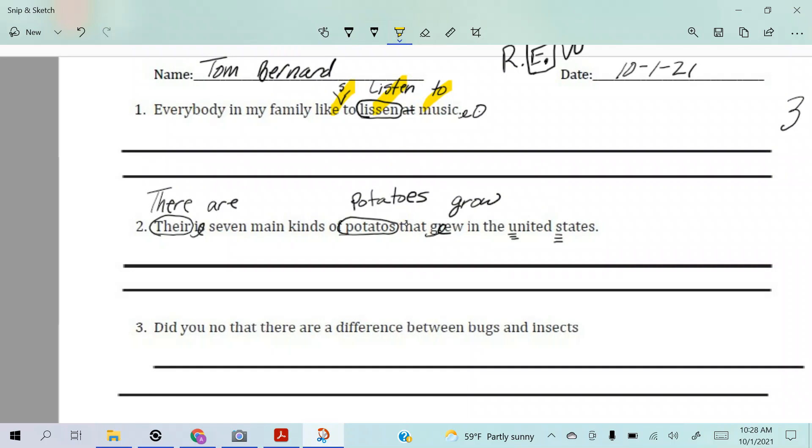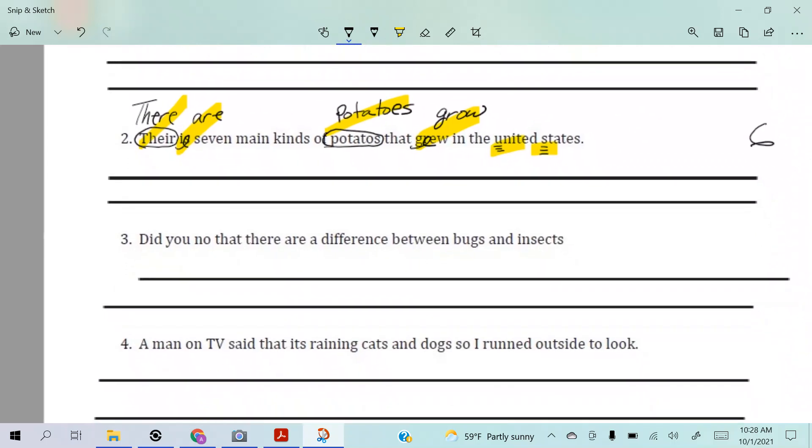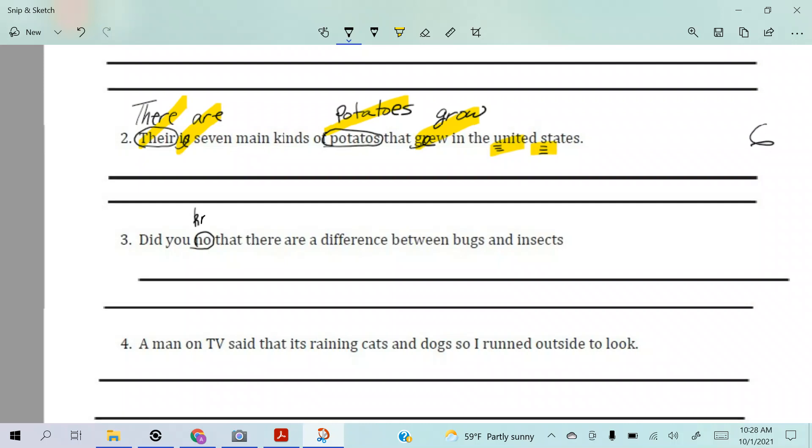All right, so we have 1, 2, 3, 4, 5, 6 - six corrections for number two. Lots of stuff to be found there. All right, did you know that there are a difference between bugs and insects? Okay, this is the wrong form of that word. Did you know that there is a difference between bugs and insects? All right, it looks like on this one we have 1, 2, 3 corrections.